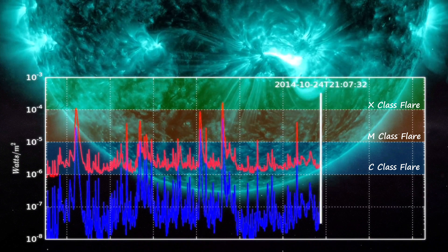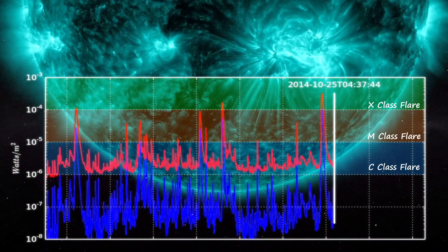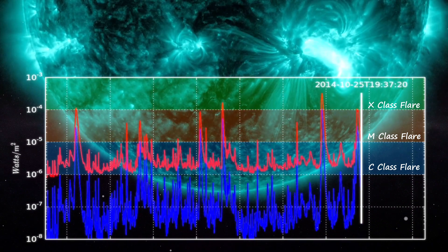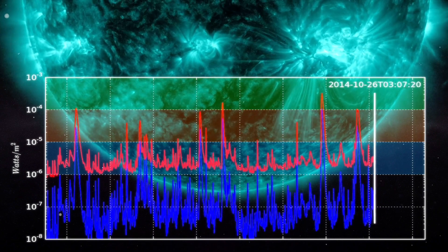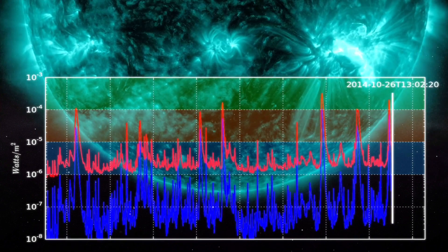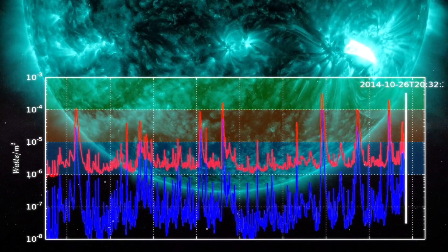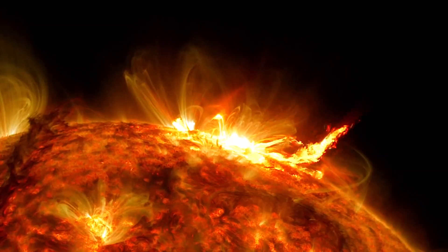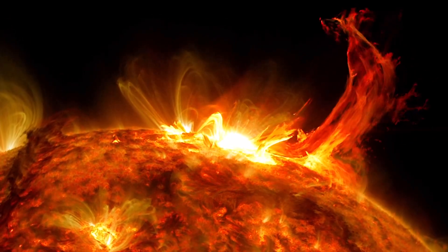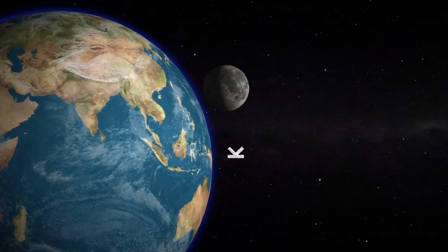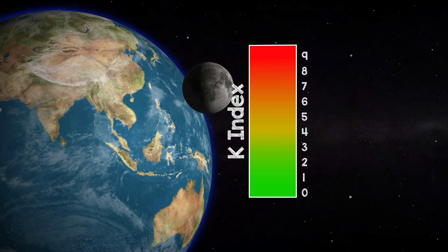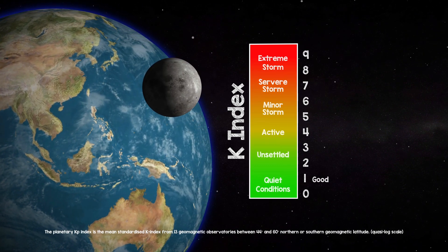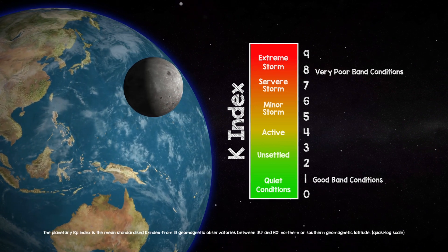Solar flares are large eruptions of electromagnetic radiation lasting from minutes to hours. These flares are the origin of solar storms, increasing the level of geomagnetic activity and affecting usable radio frequencies, which in turn cause radio blackouts. The Planetary K Index, or Kp value, is the Global Geomagnetic Activity Index based on three-hour measurements from ground-based magnetometers around the world. It's an excellent indication of disturbances in the Earth's magnetic field — the lower the number, the better for DX.